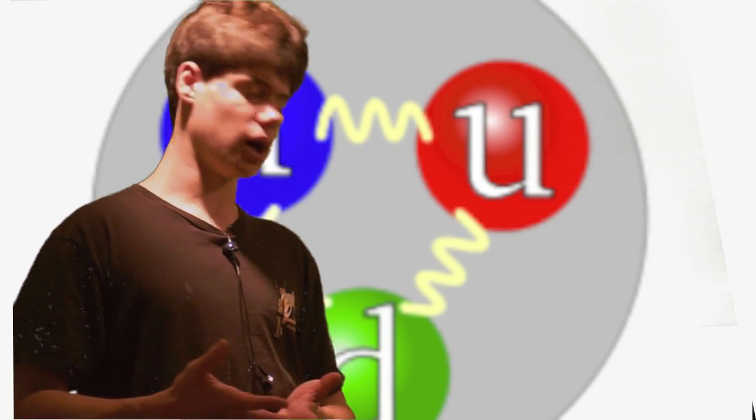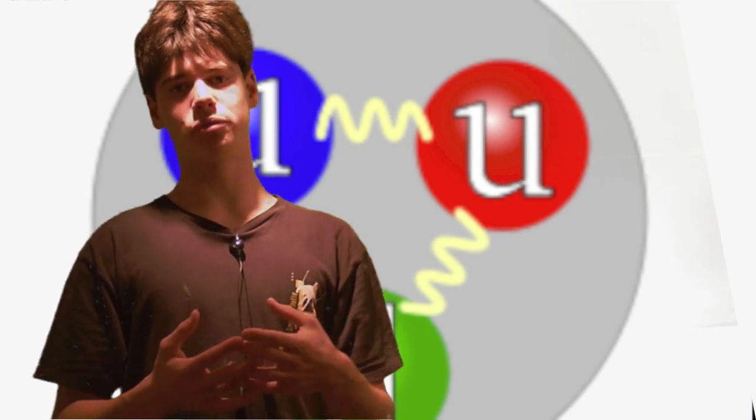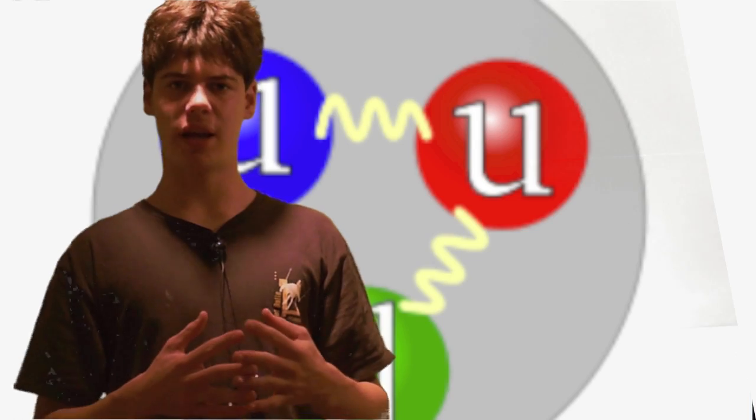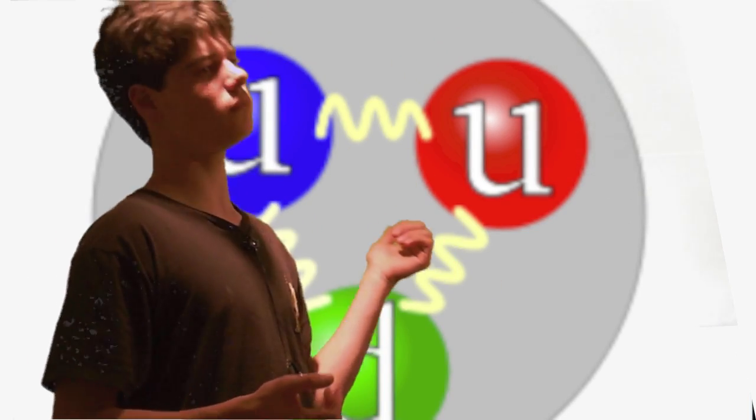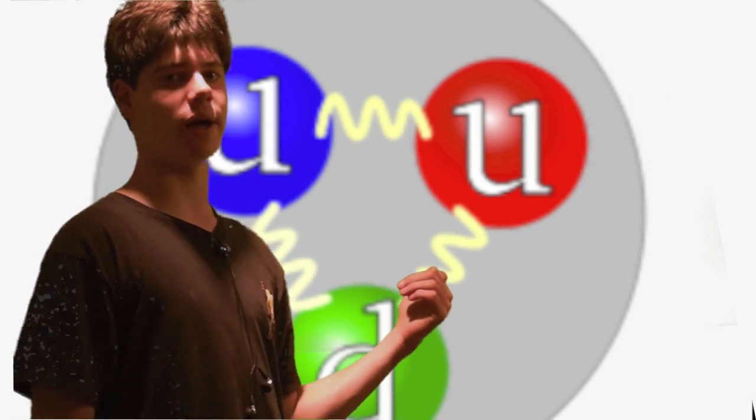So how does color charge create the strong force? Well, it was originally hypothesized because of something called the Pauli Exclusion Principle, which states that no two fermions can have the same exact quantum numbers. But if you look, in a proton, there's two up and one down quarks.